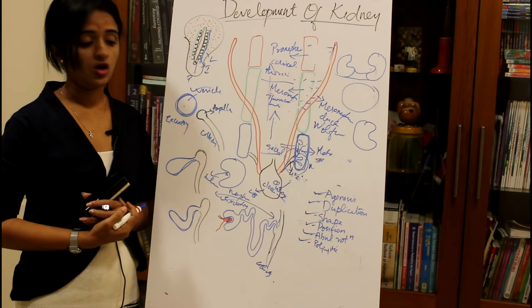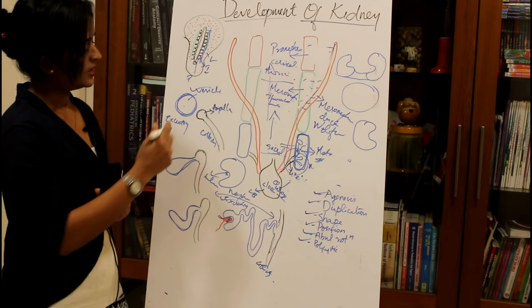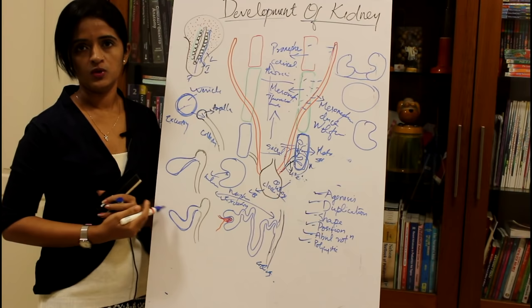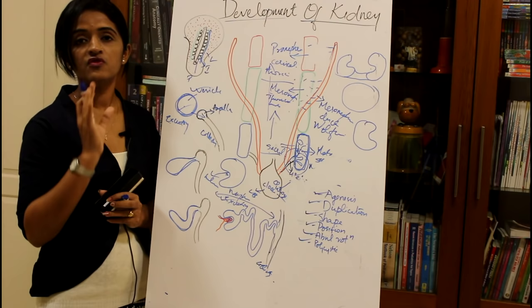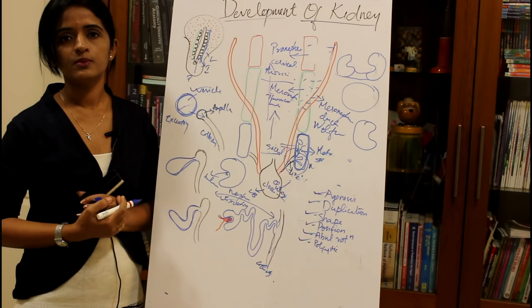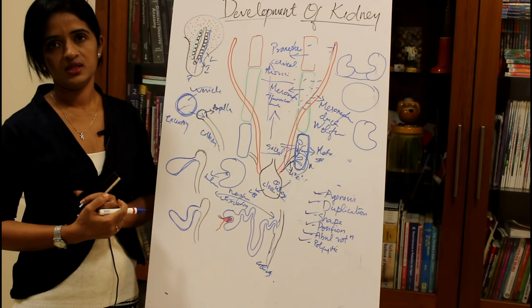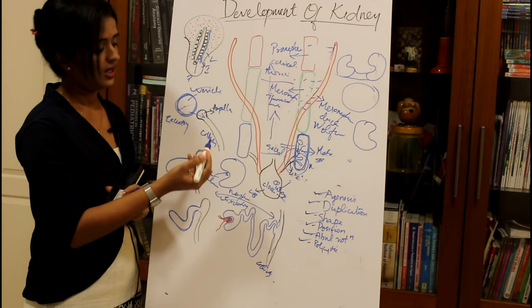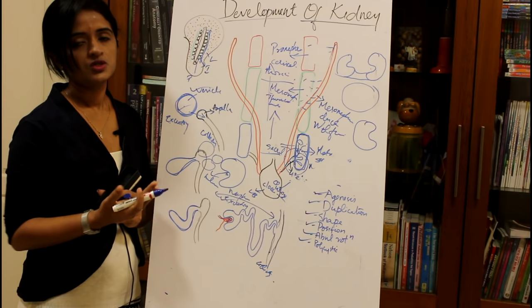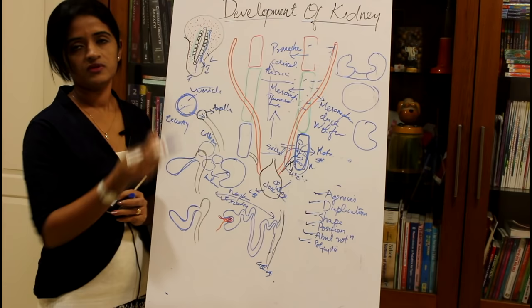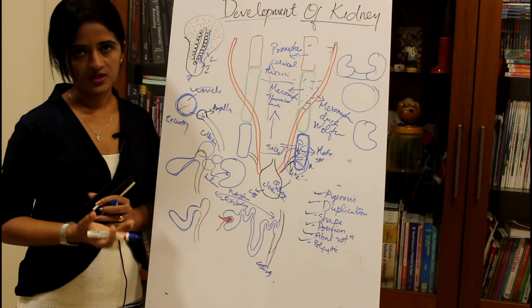Congenital polycystic kidney occurs when the metanephric vesicle does not join with the ampulla. When a section of the kidney is taken, it will be filled with non-functional vesicles. There are two theories: the vesicles may be derived from the excretory unit or from the collecting unit, but in both cases the kidney is studded with non-functional vesicles.